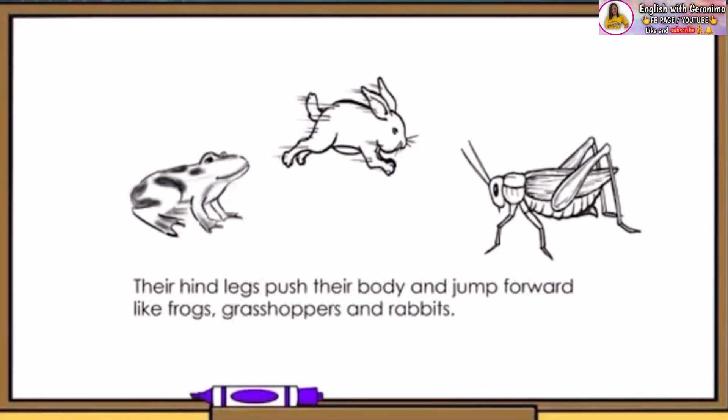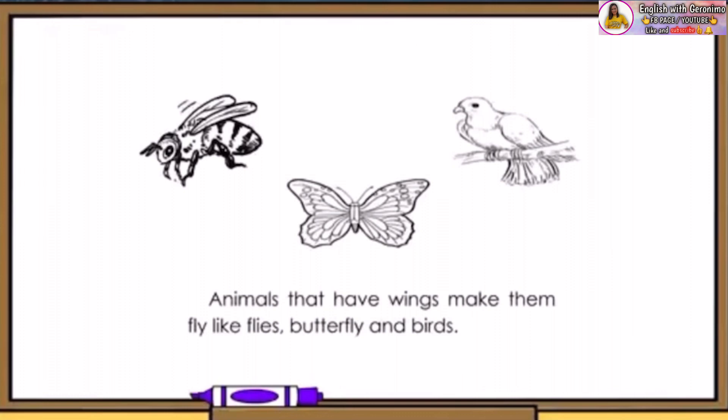Look up at the sky. What animals do you usually see up there? You see animals with wings, butterflies, and birds. You see them flying. Animals that have wings make them fly. Do you know other animals that have wings? Can you name them?